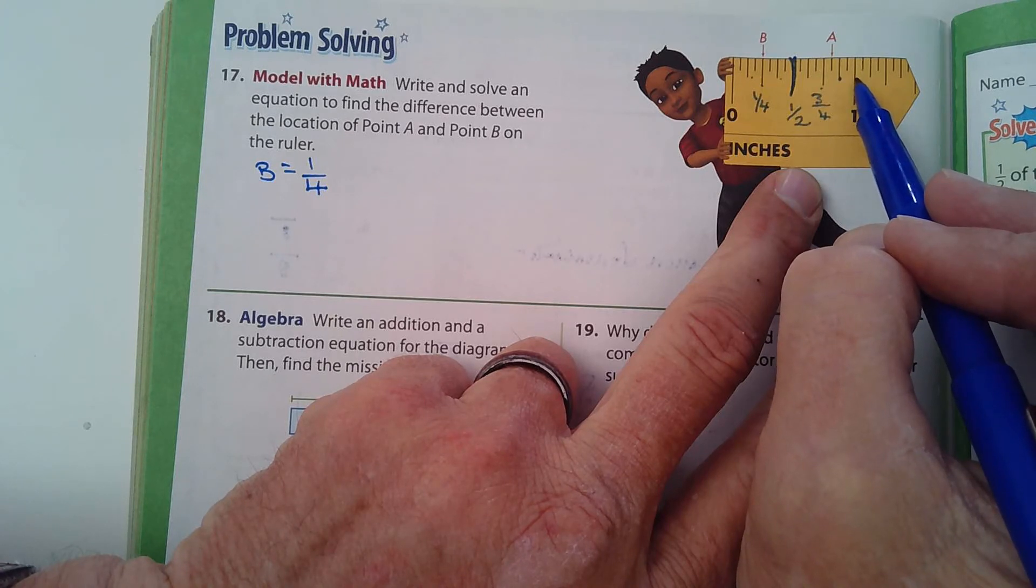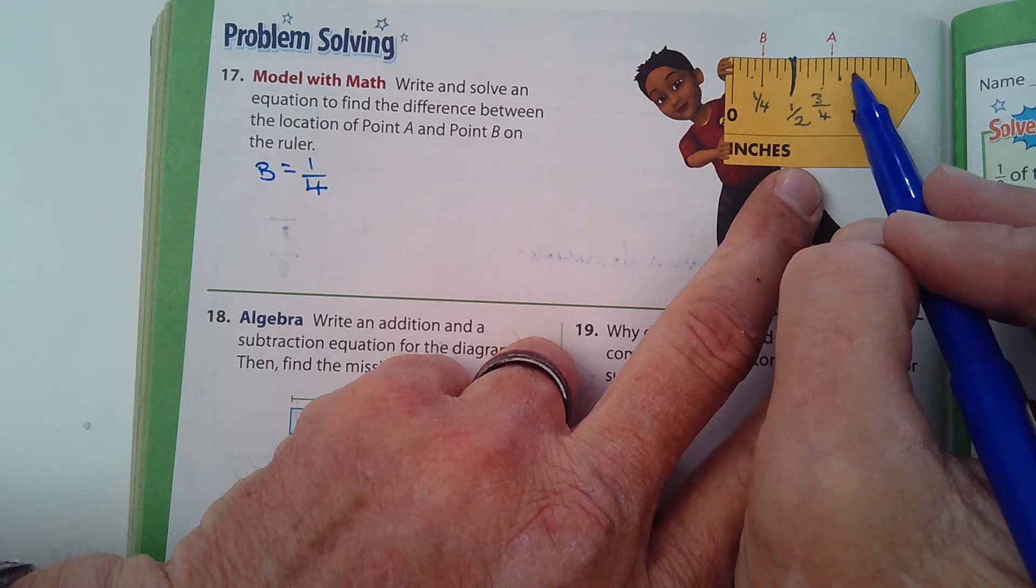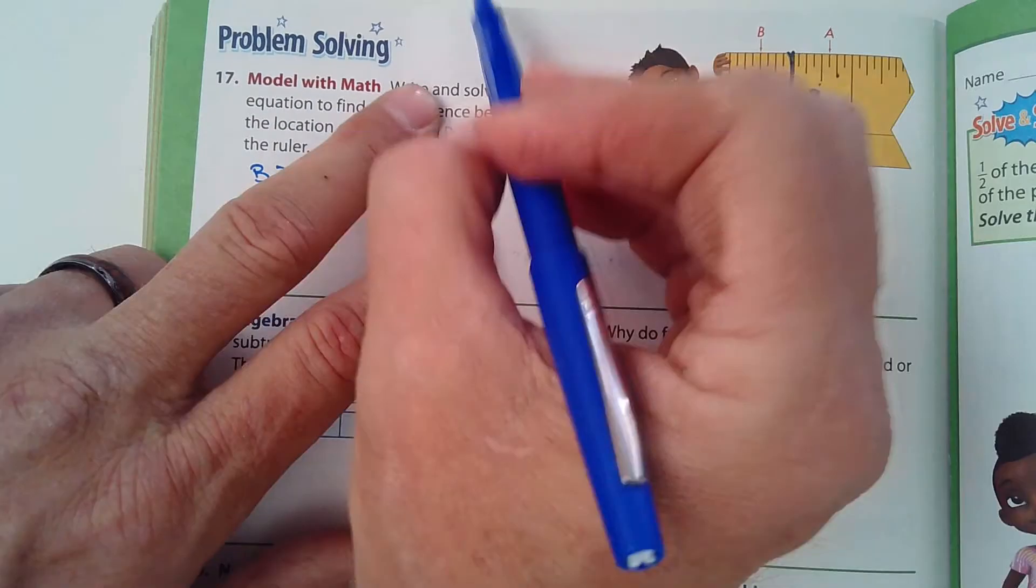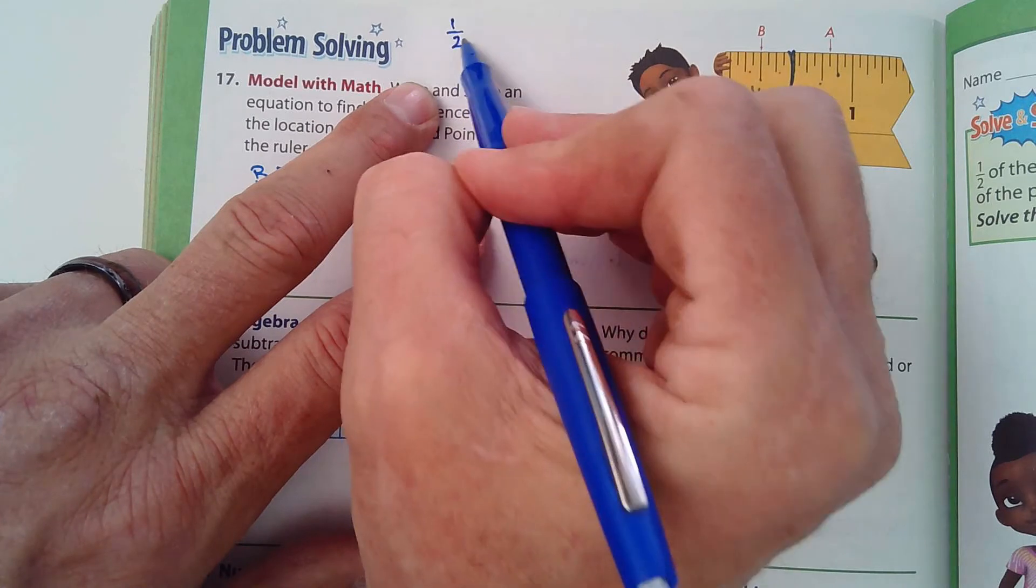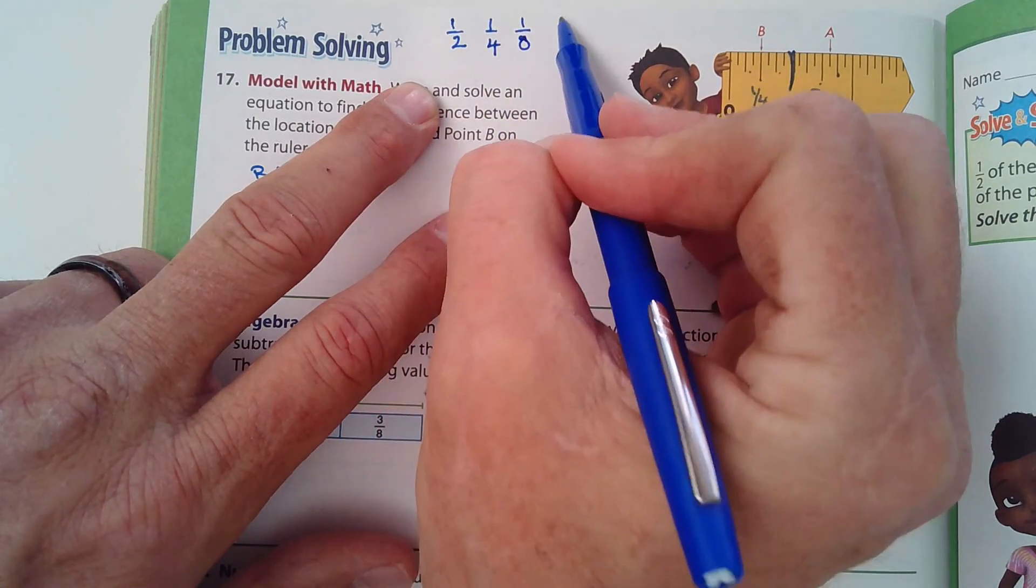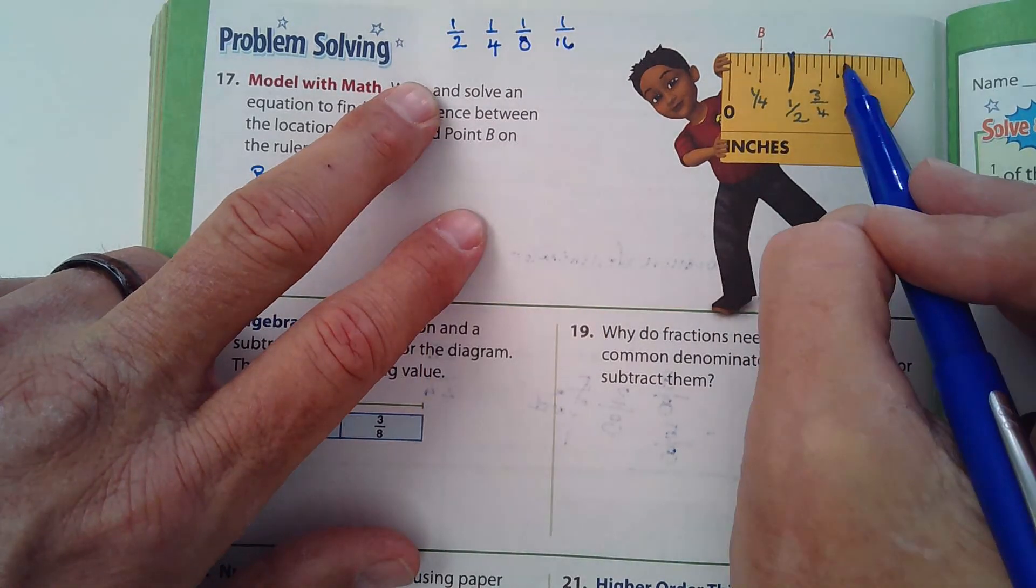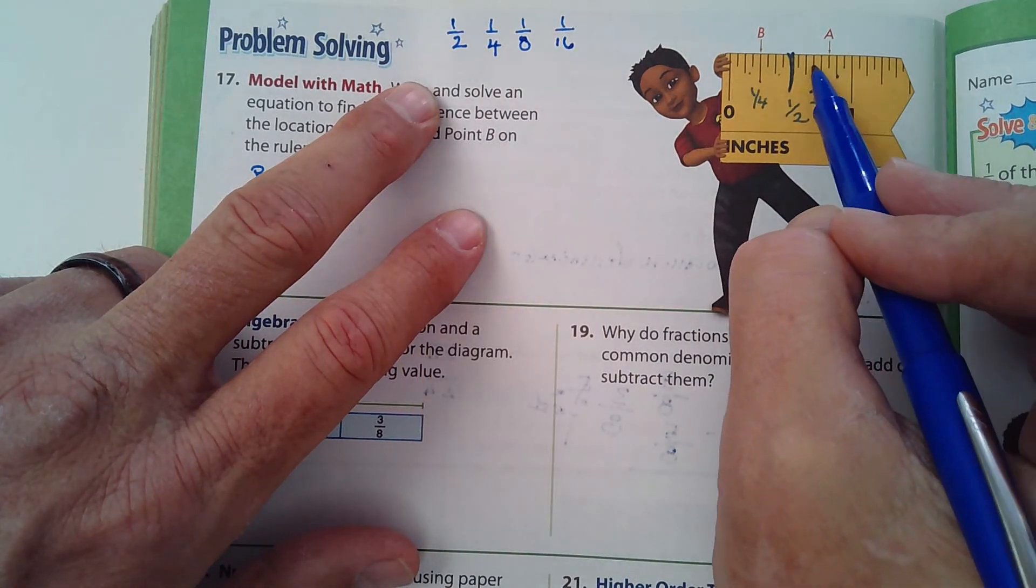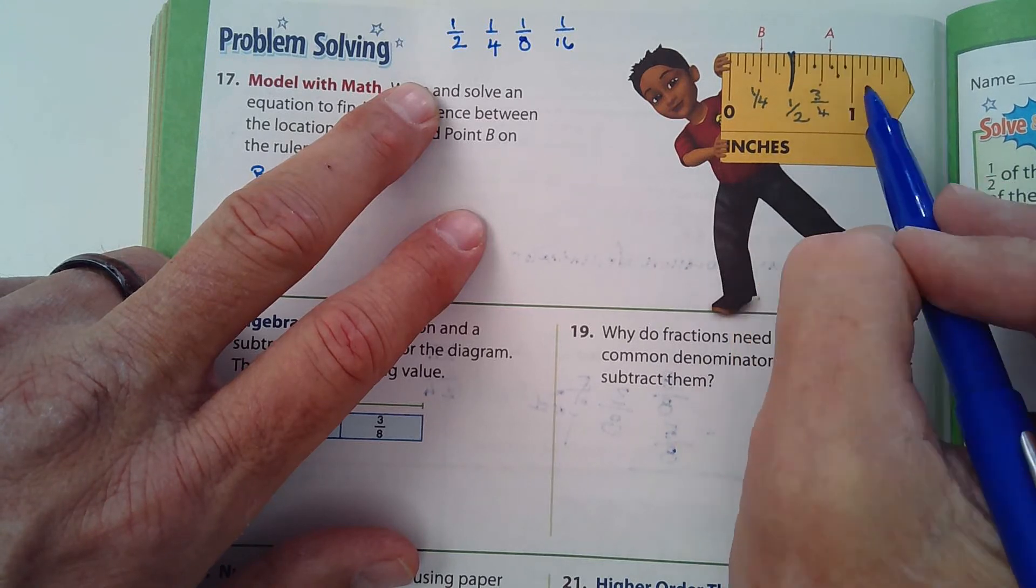How do I know that? Because there'd be one, two, three, four, five, six, seven, eight. Eight eighths in one. The next mark would be sixteenths. Notice how they're getting progressively smaller. First, we started with a half. Then we went to quarters. And then we went to eighths. And the last one is sixteenths.